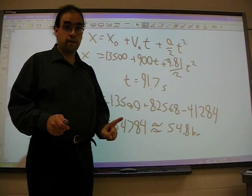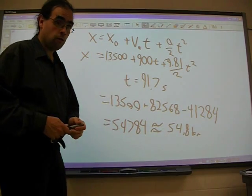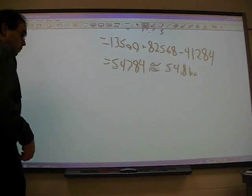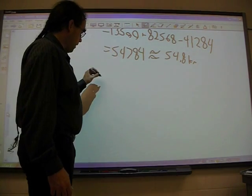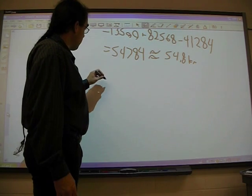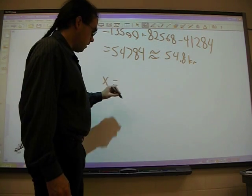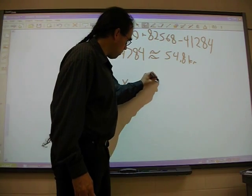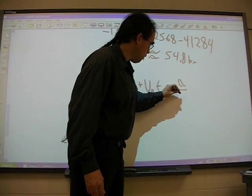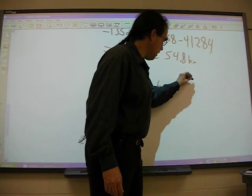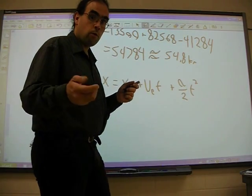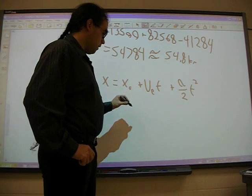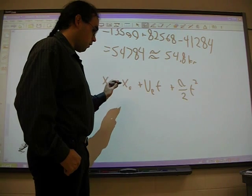And so at this point here we have a velocity of zero. We are 54.8 kilometers up. And now we are beginning our phase three, our free fall back to earth. And all we need to know now is how long does that take? Because the total time in the air is the free fall time plus this 91.7 plus the 30 seconds it took for us to burn up that fuel. And the sum of those three times really, the time, that's what we're looking for.